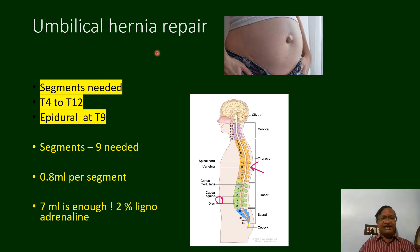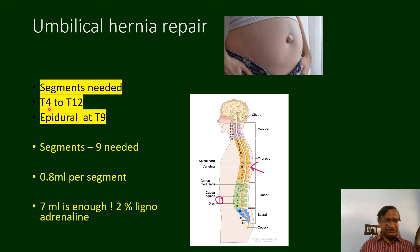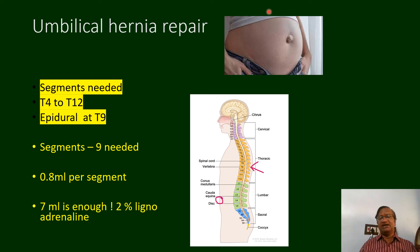For umbilical hernia repair, we need to block T4 to T12; peritoneal stimulation can be painful if T4-T6 is not blocked. With an epidural catheter at T9, we need to block 9 segments — T4 to T12. At 0.7 ml per segment, approximately 7 ml of 2% lignocaine with adrenalin is enough. The limbs can still move — this is what is called segmental thoracic epidural.